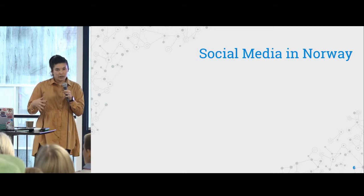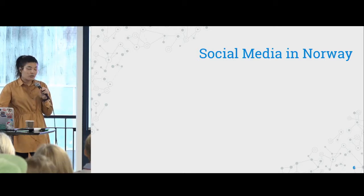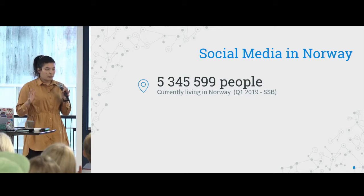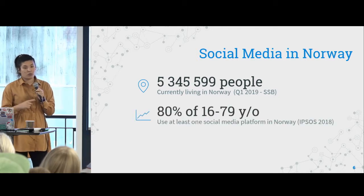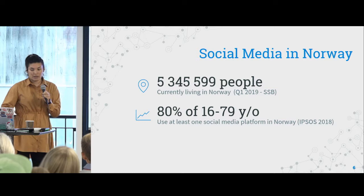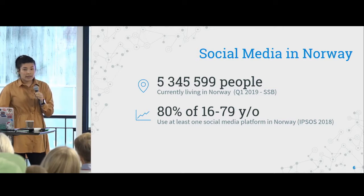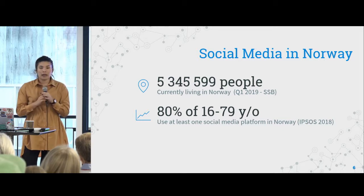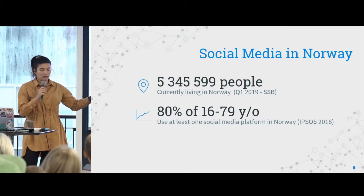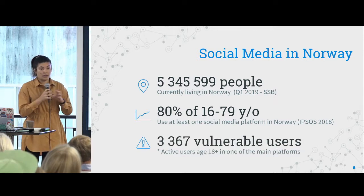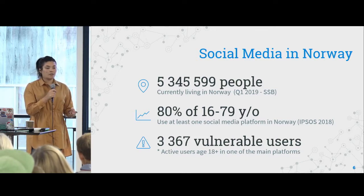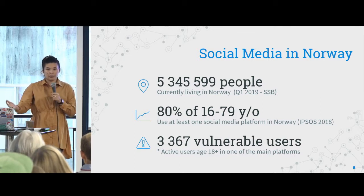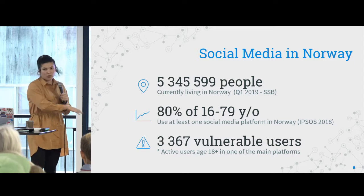What is happening here in Norway? In this beautiful country of over 5 million people, if you look at everybody from 16 to 79 years old, 80% are using at least one social media platform. For my thesis — I just finished school this summer — I collected a dataset of about 5,000 people. From those 5,000 profiles, 3,367 had some sort of sensitive data that they were sharing publicly to everybody.